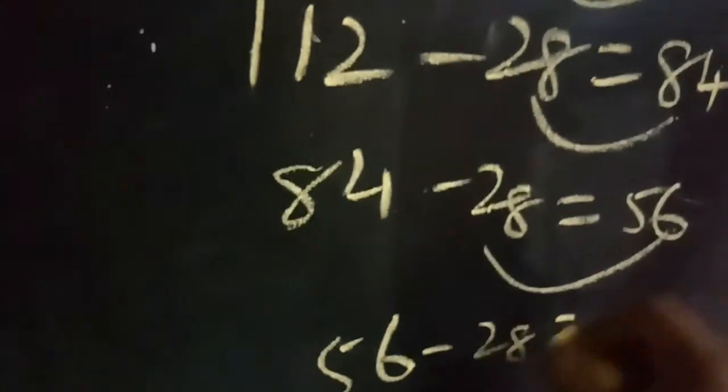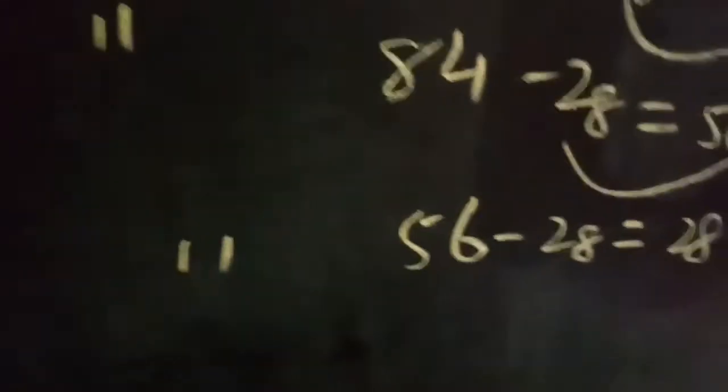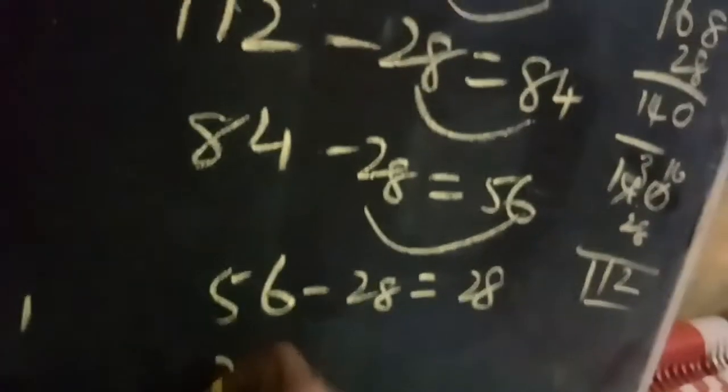84 minus 28 equals 56. The largest number is 56 minus 28.